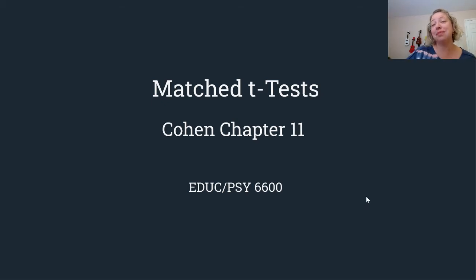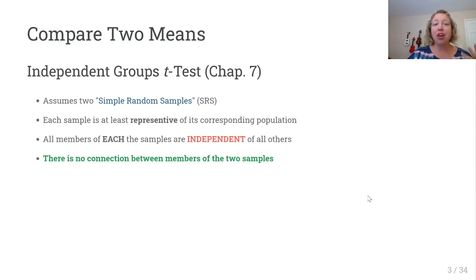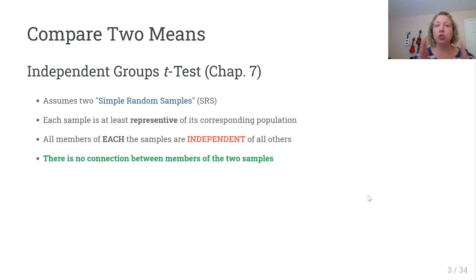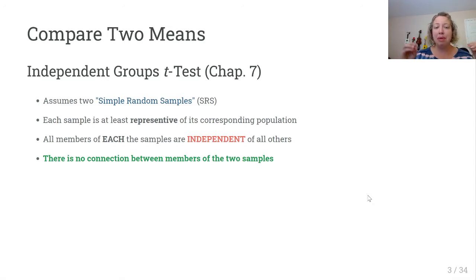Chapter 11: matched pairs t-tests. Up until this point, we've talked about t-tests comparing two groups. We did one-sample and then two-sample t-tests. The two-sample t-tests covered in Chapter 7 were for two groups that were not connected to each other. We assumed both groups are simple random samples, each representing their own populations, and we want to know if the greater populations differ. Each sample is independent of the other — there's no connection between the two.